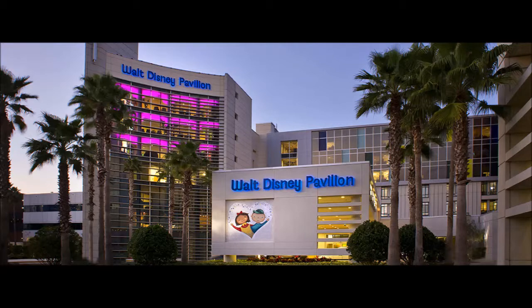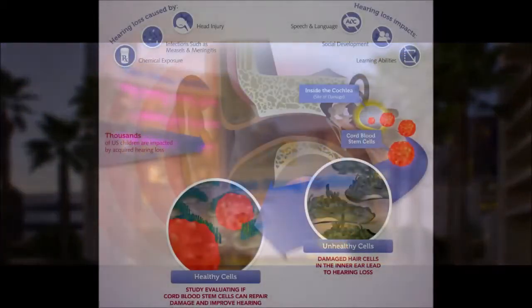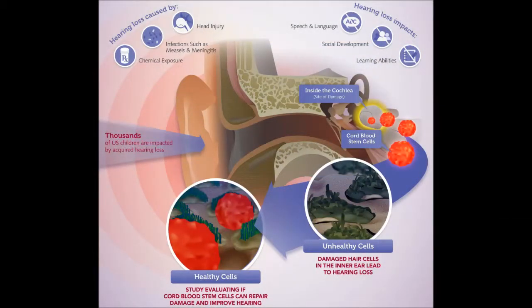Acquired sensorineural hearing loss results from damage to hair cells in the inner ear cochlea and can be caused by illness, medication, noise exposure, birth injury, or head trauma.